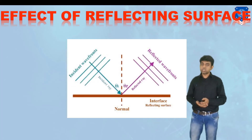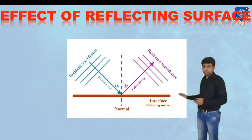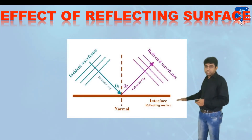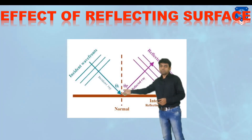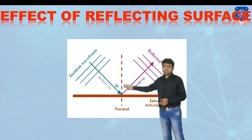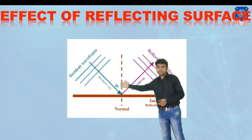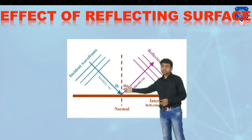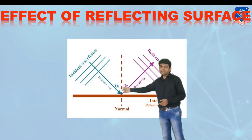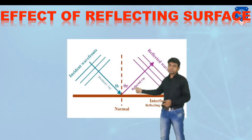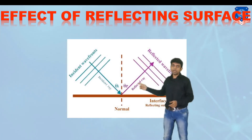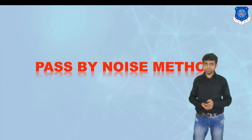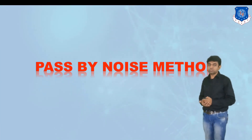Now let us understand the effect of a reflecting surface. If we want to reduce sound, we can use this fundamental principle. If a sound ray is falling on a surface at an angle theta-i with reference to the vertical axis, the reflecting surface will reflect the incident ray at an angle equal to theta-i. So if theta-i is 30 degrees, it will reflect the ray at 30 degrees. The theory states that theta-i always equals theta-r.